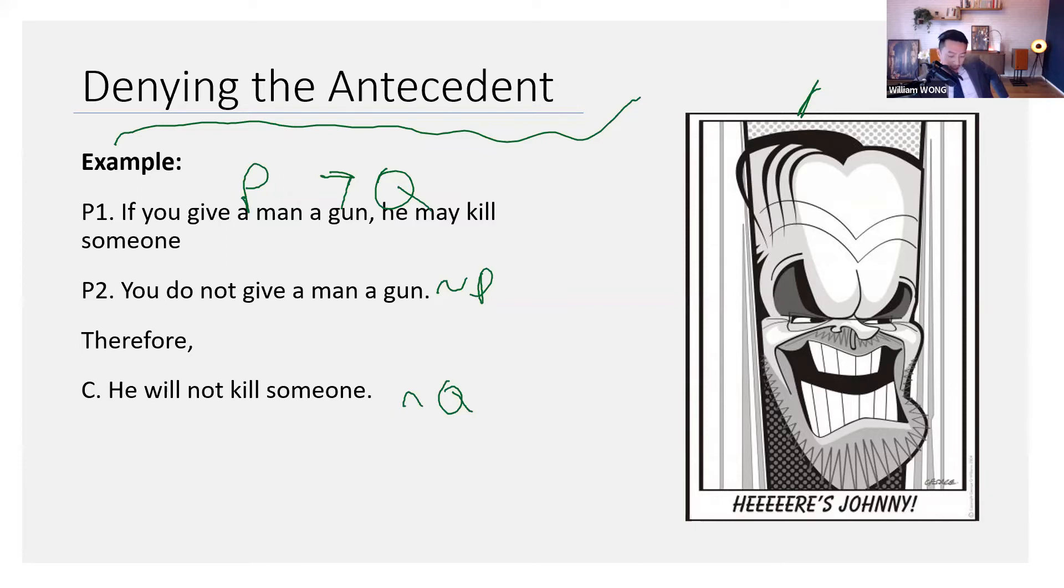But what logic does for us is give us the tools to symbolize it. And hence, then it becomes super clear that the argument is fallacious because not Q simply does not follow from premise 1 and 2. Any questions so far?